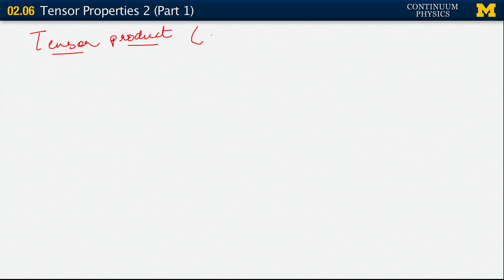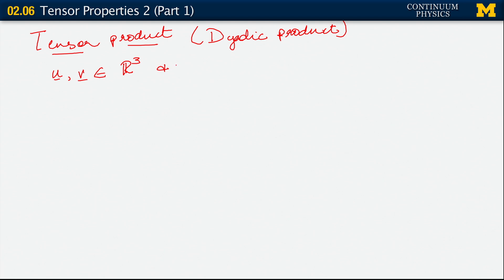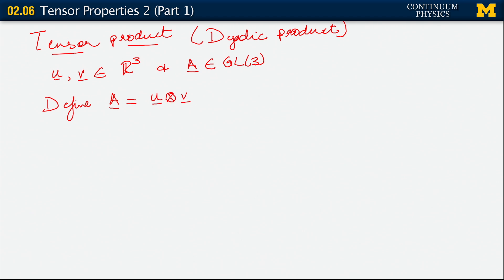You've almost certainly encountered this before in the form of the dyadic product. So the way this works is the following: if u and v belong to R3, meaning they are vectors, and if A is a tensor — A belongs to GL3 — we can define A equals the tensor product of u and v, which we write as u ⊗ v. We will read that as 'u tensor v.'